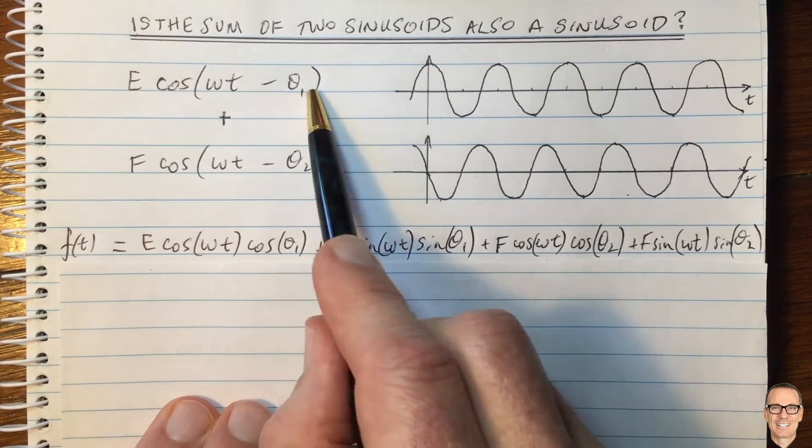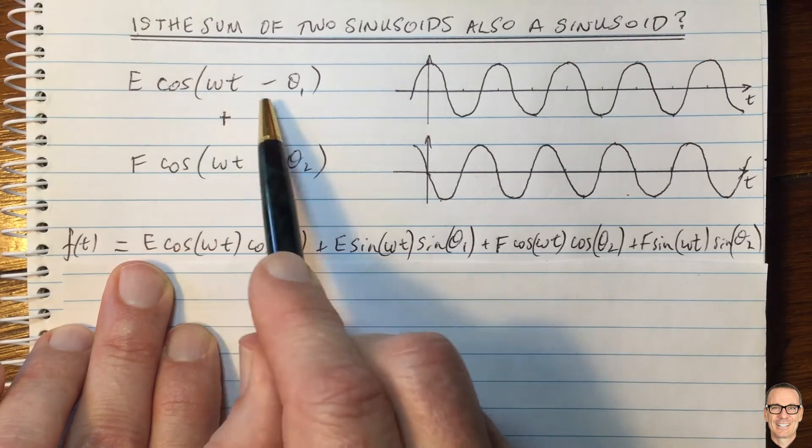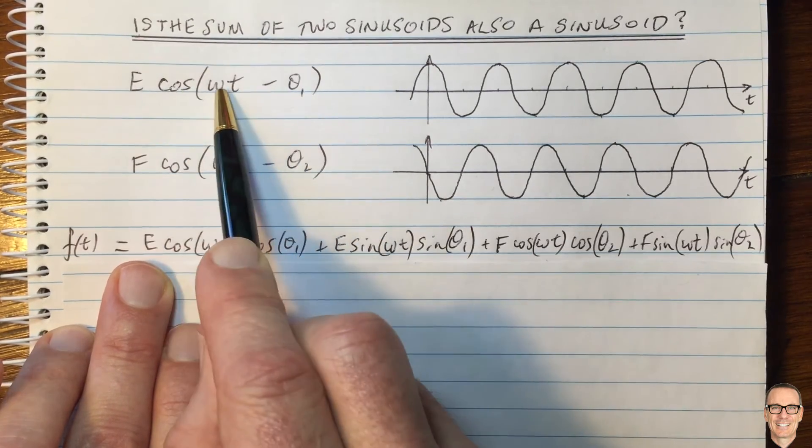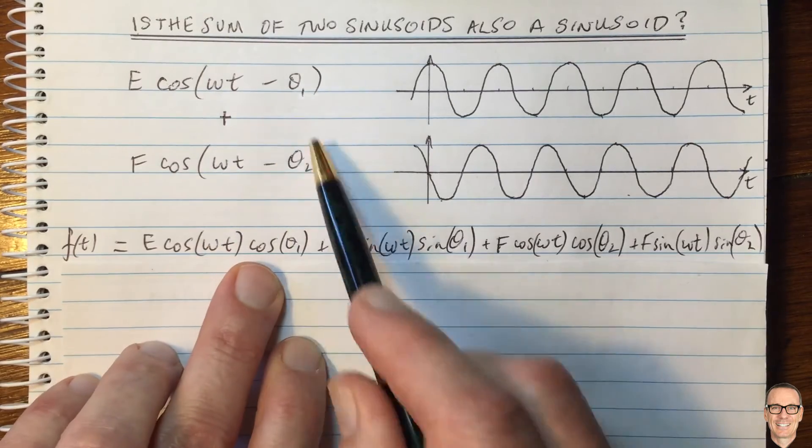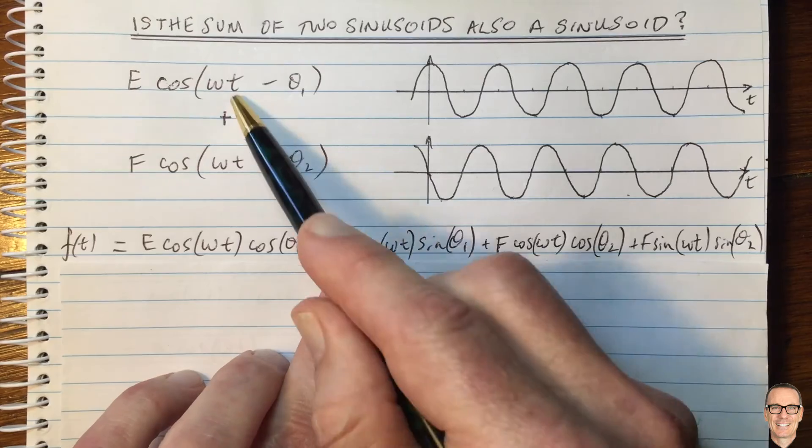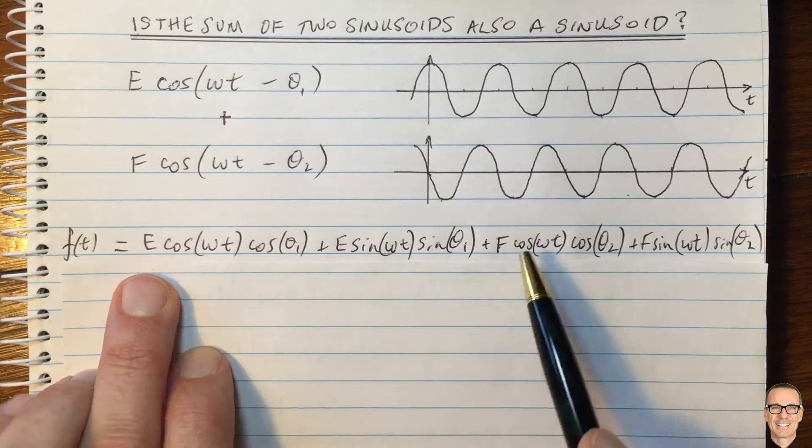We're just going to write down an expansion of this function here. So we have E and cos with two terms. Cos of A and B can be written as cos of the first one times cos of the second one plus sine of the first one, sine of the second one. And we've just got these multiplied by E in each case.